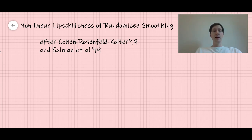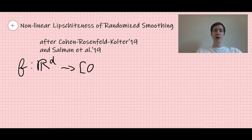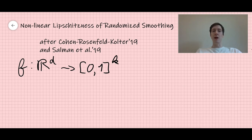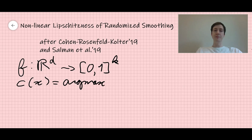So what is the setting? The setting is multiclass classification. We have a function f from R^d to [0,1]^k. This function takes any input, say an image in d-dimensional space, and returns the likelihood for each of the classes. From this likelihood function, you get a classifier C(x) by just taking the most likely class — C(x) is the argmax of fi(x) for i in 1 to k.